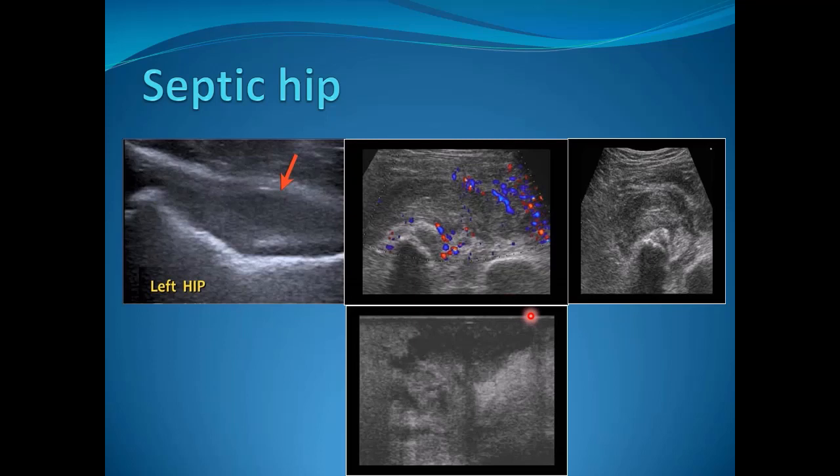You can also see synovial hypertrophy with increased vascularity. In cases of post-hip replacement infection, the infection can form tracks that reach the subcutaneous tissue, forming a large abscess.